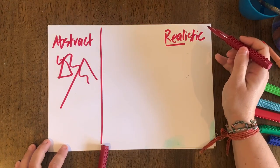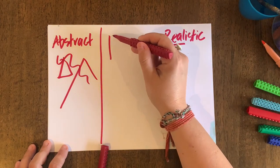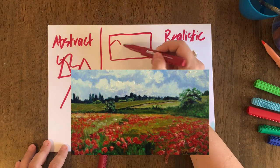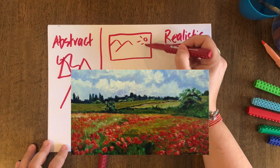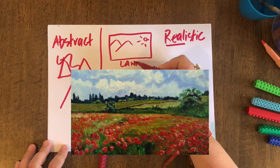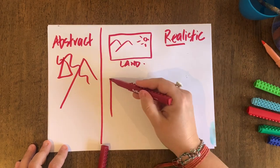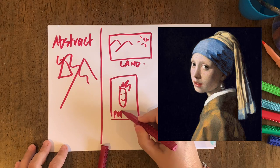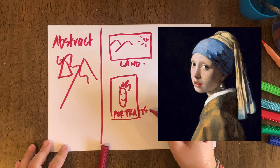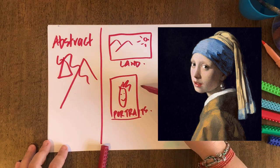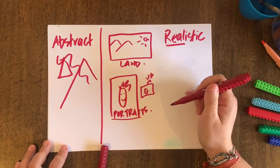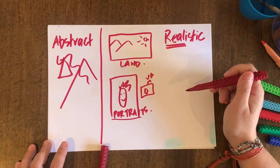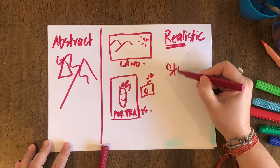Realistic art has lots of different categories. For example, people might choose to paint a realistic landscape — that means they might go outside and show the land. Other people choose to create realistic portraits, that means of people, and there are a lot of different portraits throughout history, especially before the camera was invented. Another type of realistic art, and the one we're going to focus on today, is called still life.